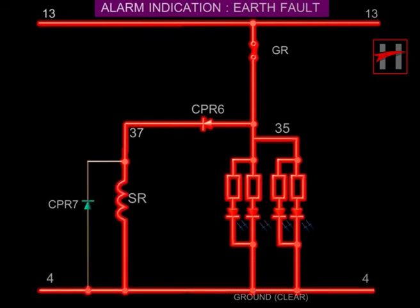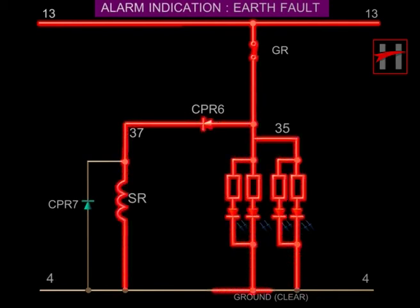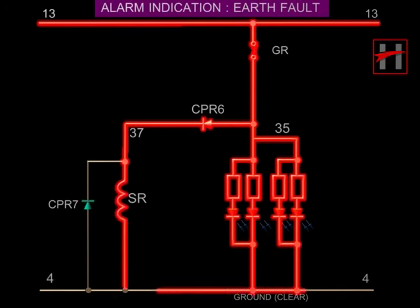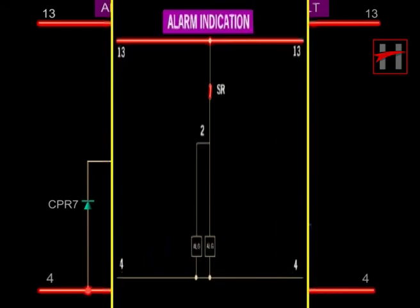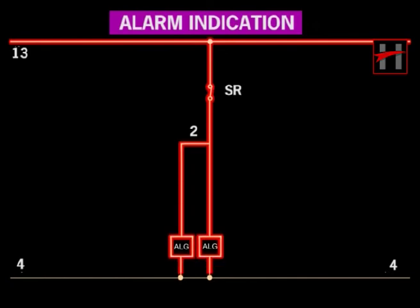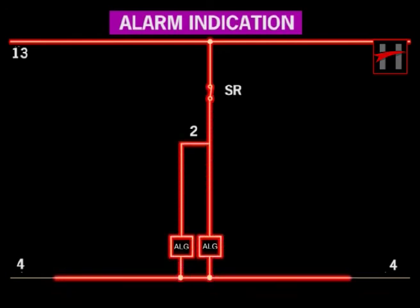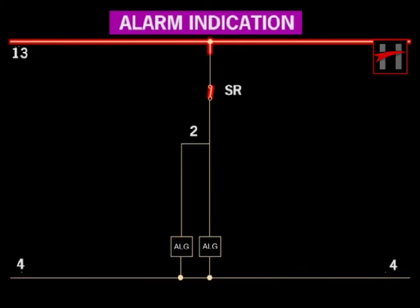In case of the audio alarm, the current flows through the CPR, cable number 37, and energizes the signal relay SR, completing its path with cable number 4. The SR interlock closes and the current from cable number 13 flows through the SR interlock, cable number 2, energizes the alarm bell, and completes the path with cable number 4.